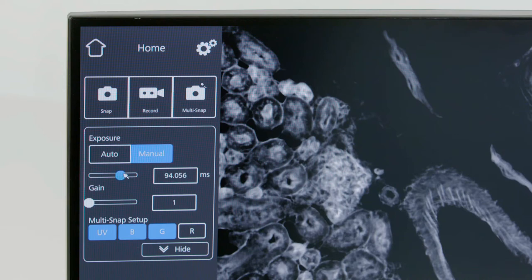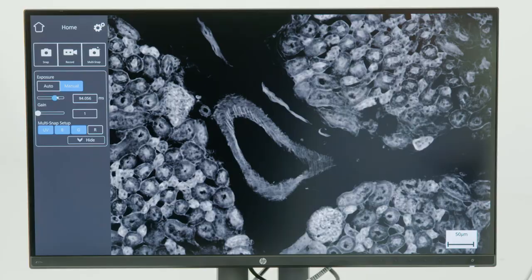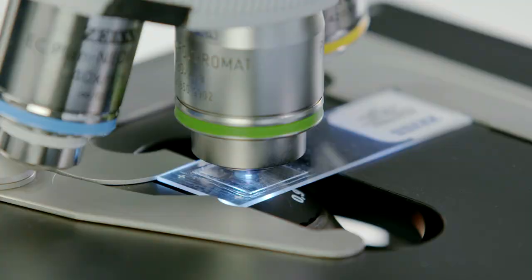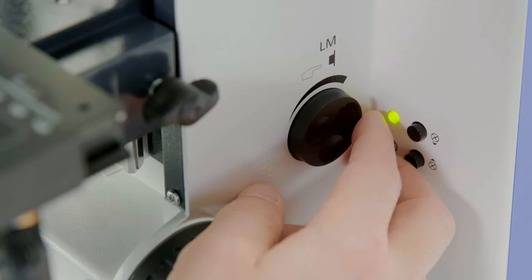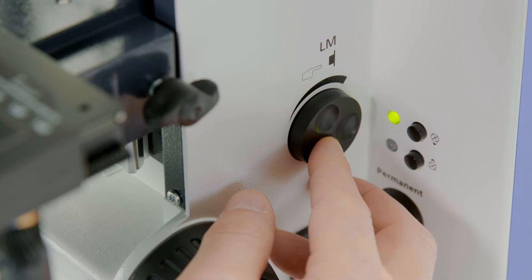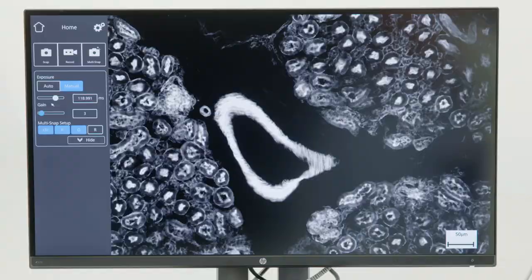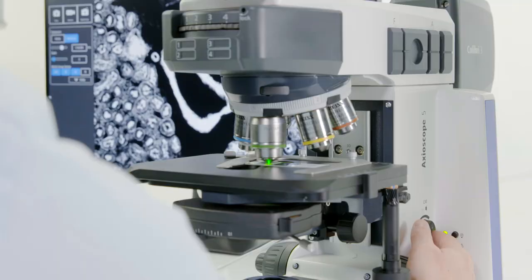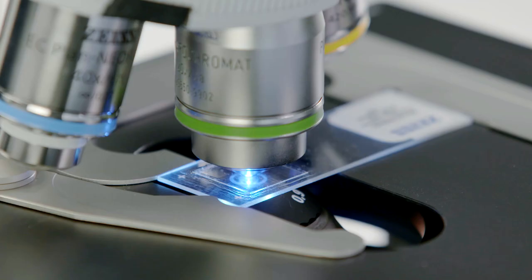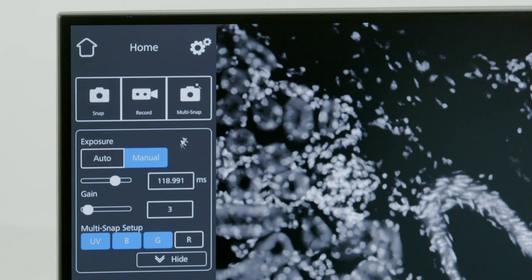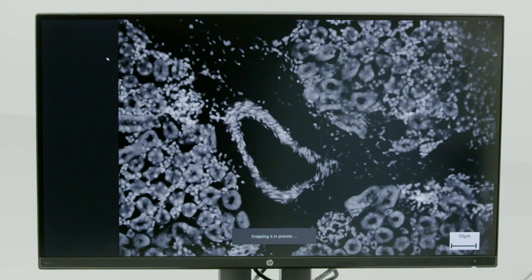Toggle to the blue LED and adapt the LED intensity with the light intensity button on the microscope so that the fluorescent signal on the monitor looks good and is not overexposed. Toggle to the green LED and do the same. Press snap. Your system takes over.